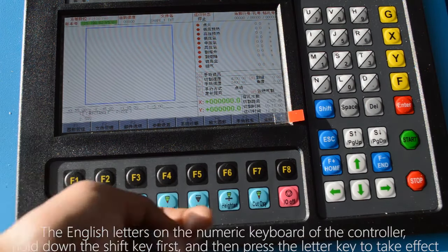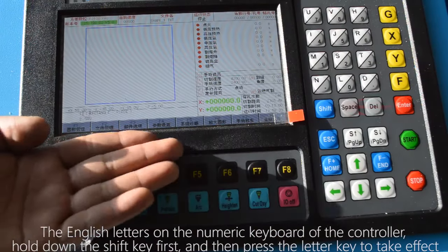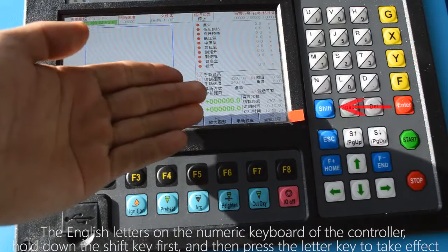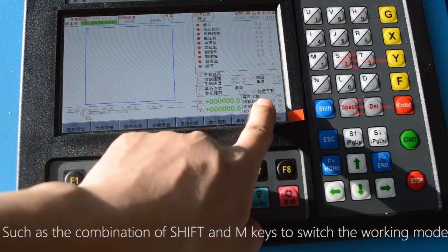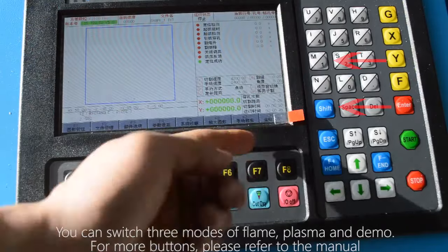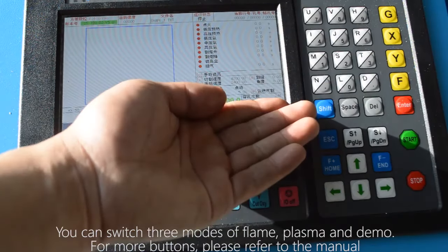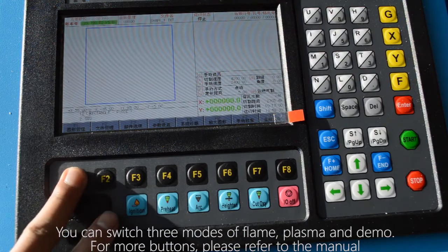The English letters on the numeric keyboard of the controller hold down the shift key first and then press the letter key to take effect such as the combination of shift and M keys to switch the working mode. You can switch three modes of flame, plasma and demo. For more buttons, please refer to the manual.